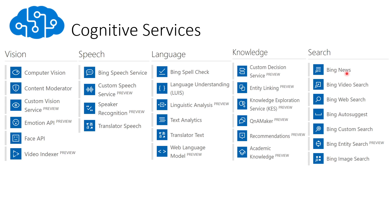In our case, for this series, we will be integrating as a skill set: computer vision and text analytics. We are going to work with our bot with language understanding, and we are going to work as a custom skill with Bing Web Search.